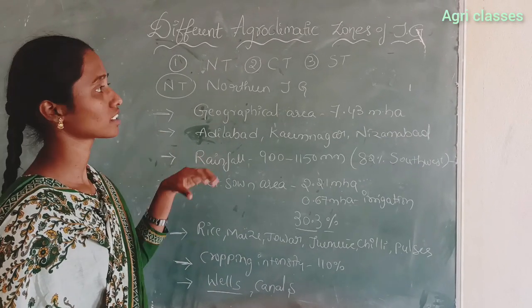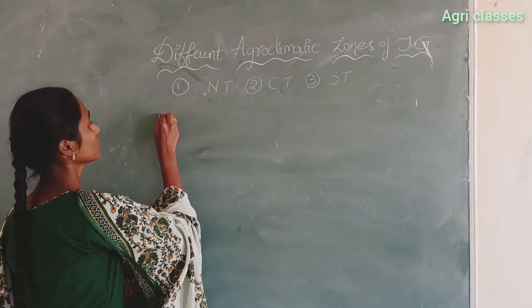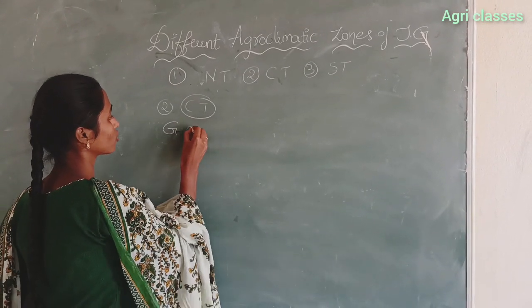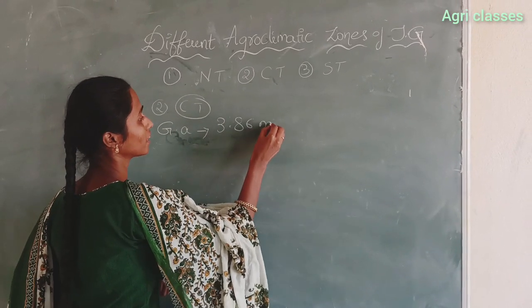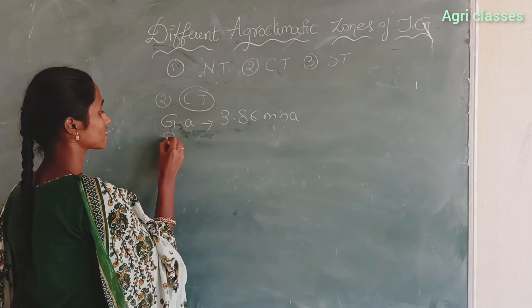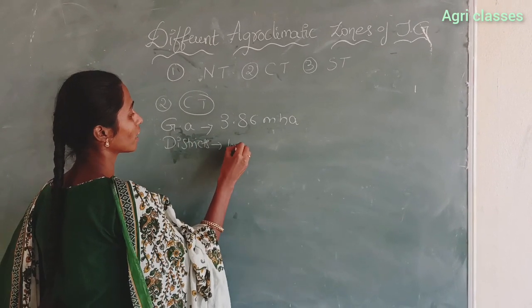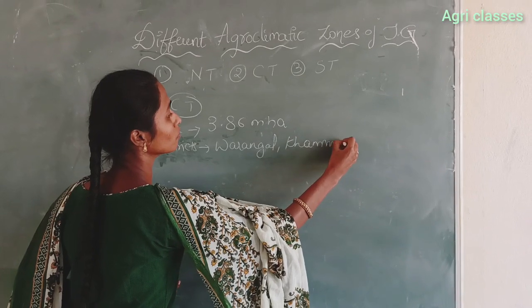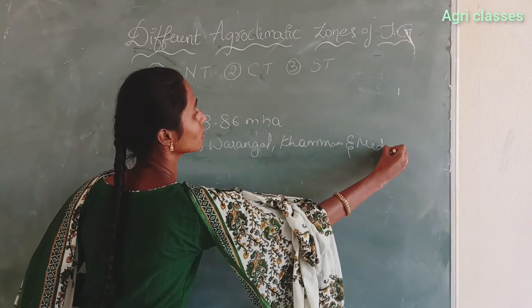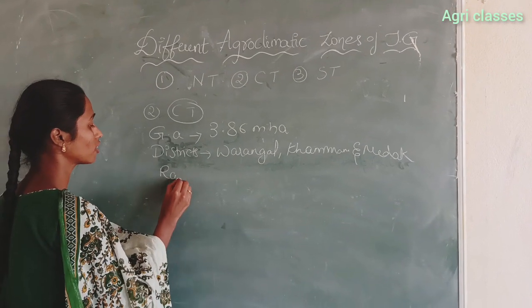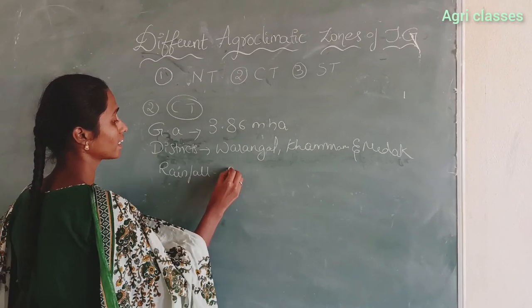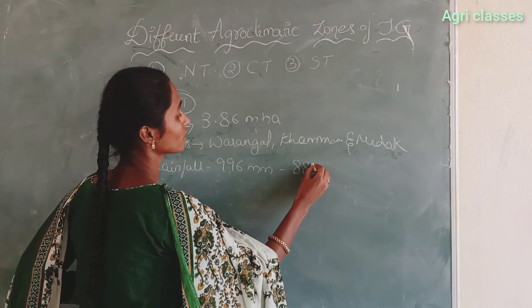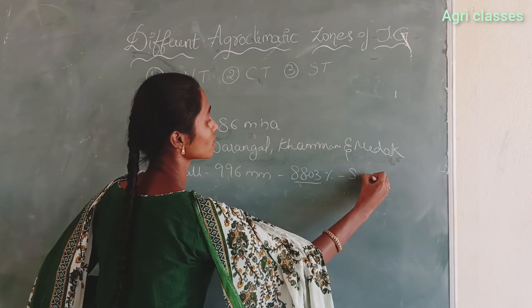Next we will discuss about the Central Telangana zone. The geographical area of the Central Telangana zone is 3.86 million hectares. The districts included in this zone are Warangal, Phangan, and others. The annual rainfall received is 996 mm, of which 88.03% is received during the southwest monsoons.